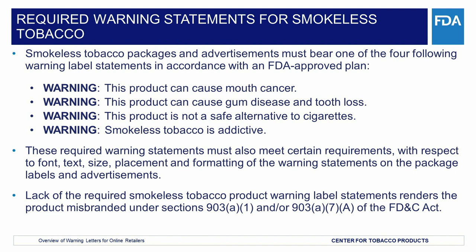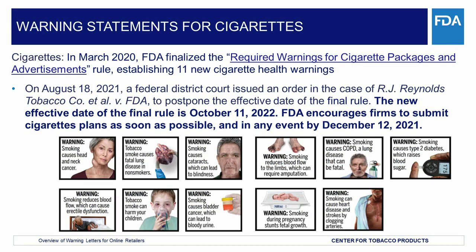Lack of the required smokeless tobacco product warning label statements misbrands the products under Sections 903(a)(1) and/or 903(a)(7)(A) of the FD&C Act. In March 2020, FDA finalized the Required Warnings for Cigarette Packages and Advertisements rule, establishing 11 new cigarette health warnings consisting of textual warning statements accompanied by color graphics in the form of concordant photorealistic images depicting the negative health consequences of cigarette smoking.